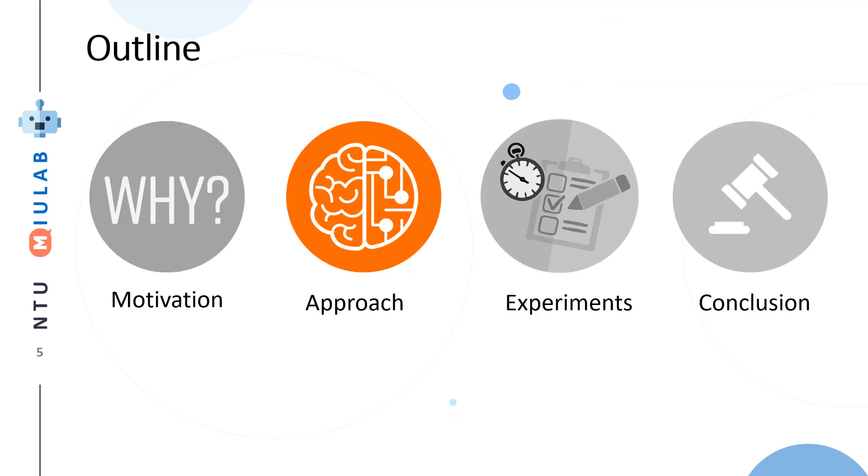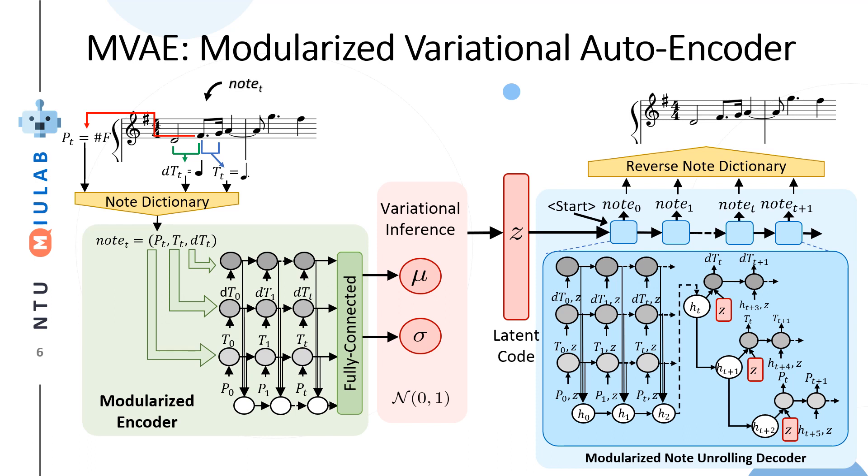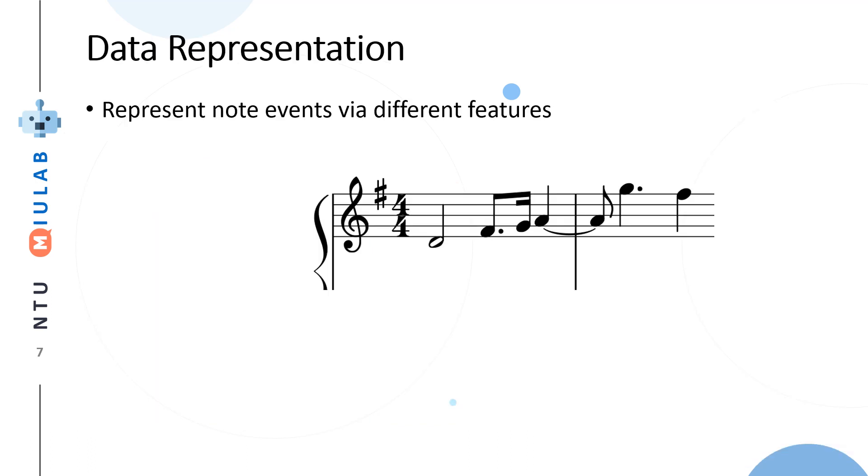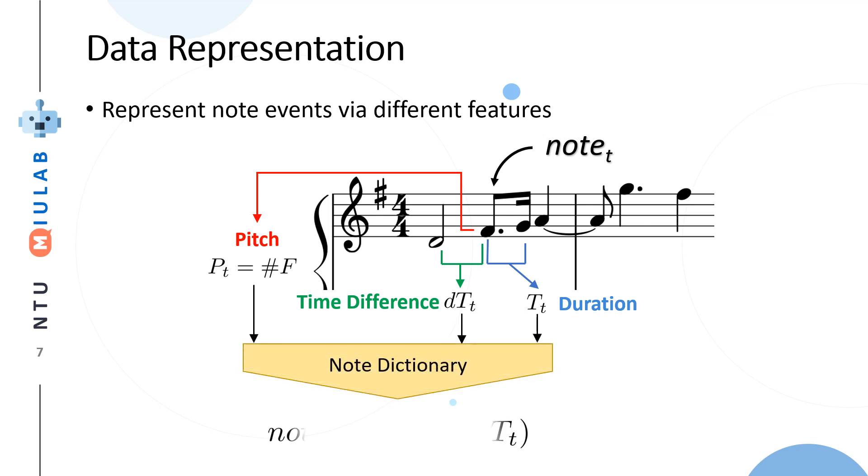Let's see our approach: modularized variational autoencoder. First, let's see how to represent the data. We represent the note event via different features. For example, let's take this note as an example. We extract the pitch information for this note and also the time difference. We use dt to represent time difference - the time this note will appear, the duration, and how long this note will stay. We use these three types of features put into a note dictionary to represent the note event.